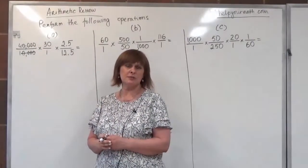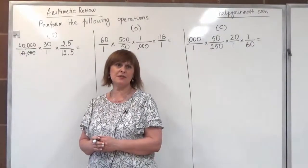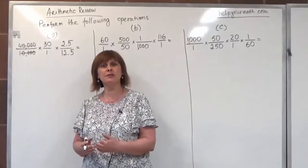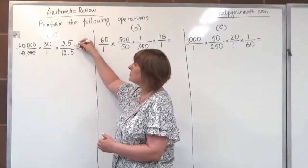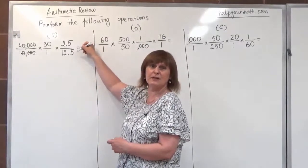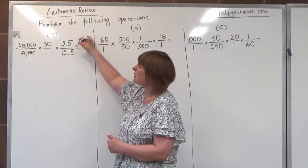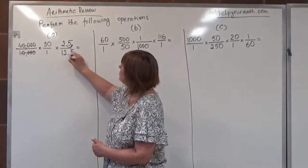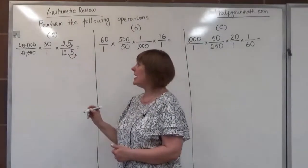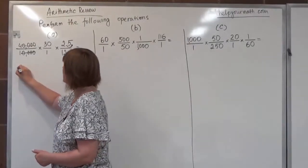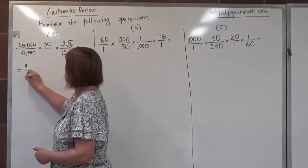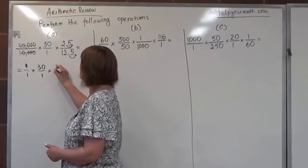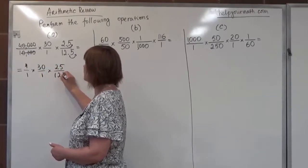At the last fraction we can observe that we have a decimal, and division of a decimal by a decimal is not convenient. That's why we want to look at how we can clear decimals. We know that if we have two decimals in a fraction, we can always make them whole numbers by shifting the decimal point the same number of places. So we shift one place in the numerator and one in the denominator. We now have 4 over 1, times 30 over 1, times 25 over 125.